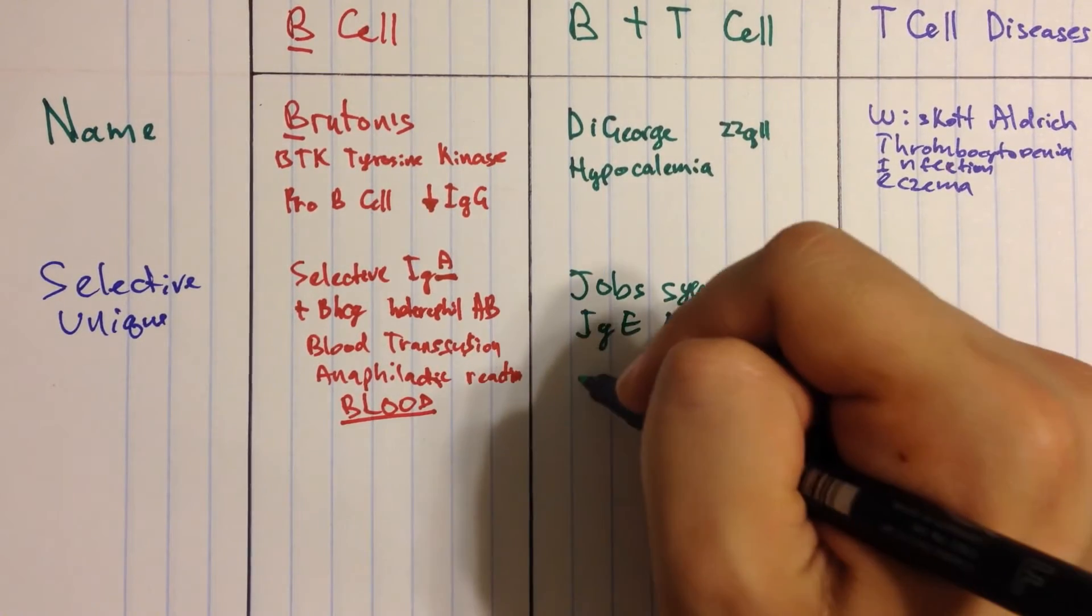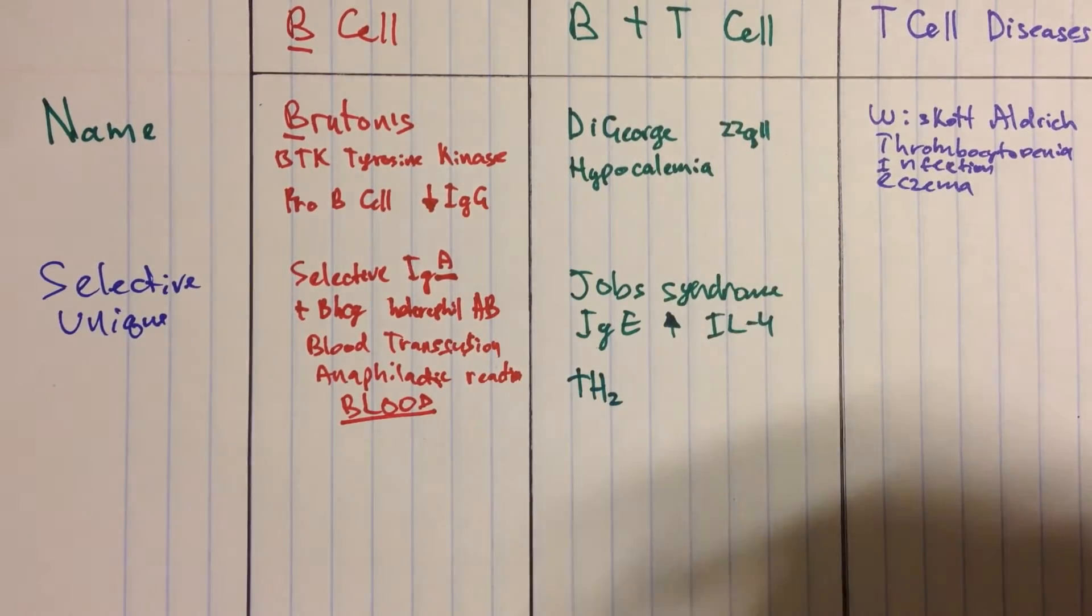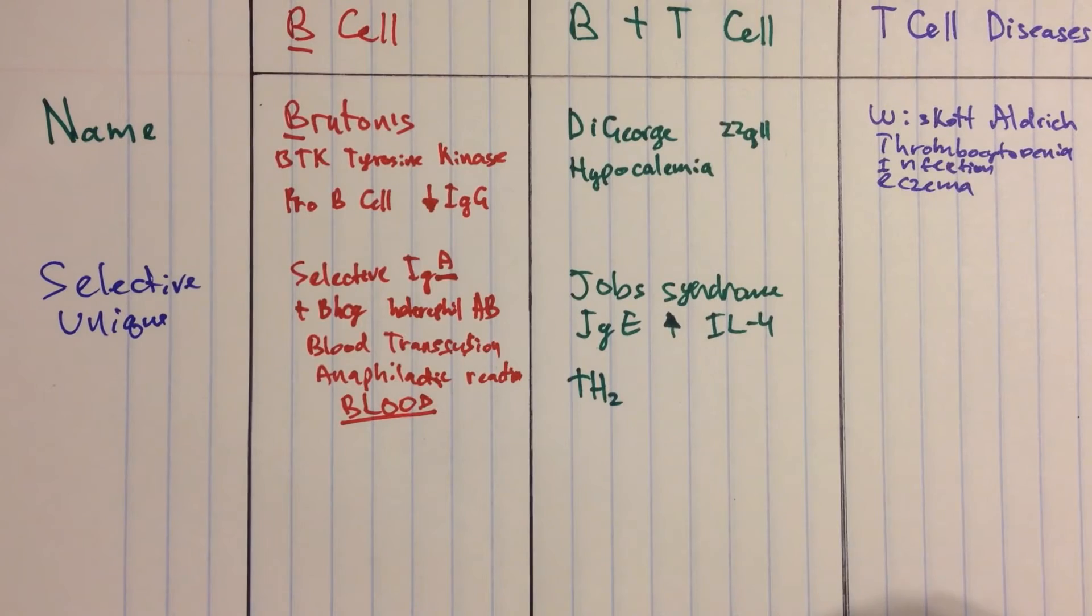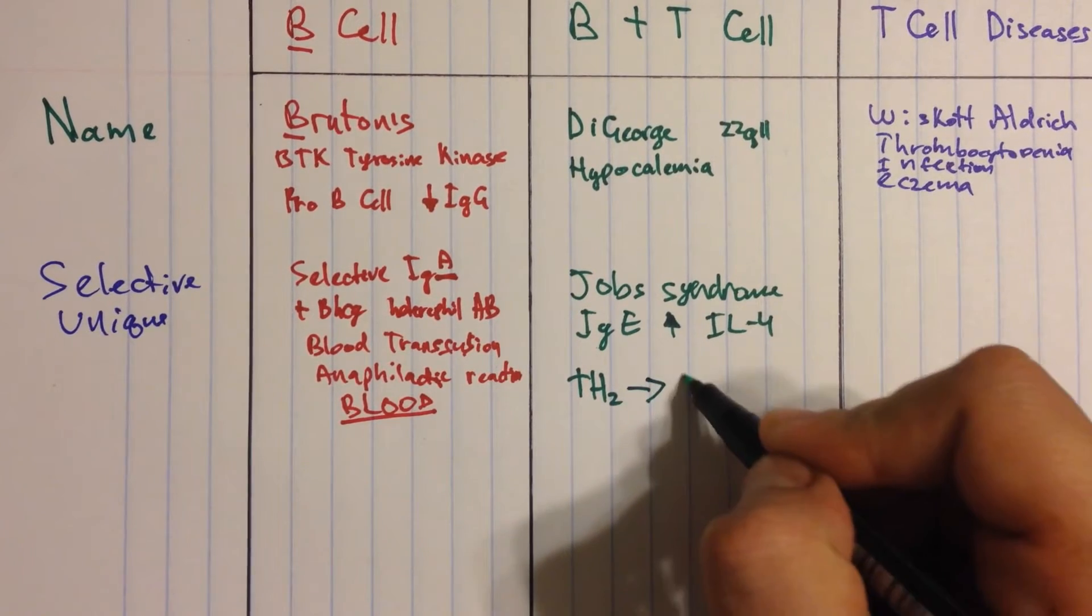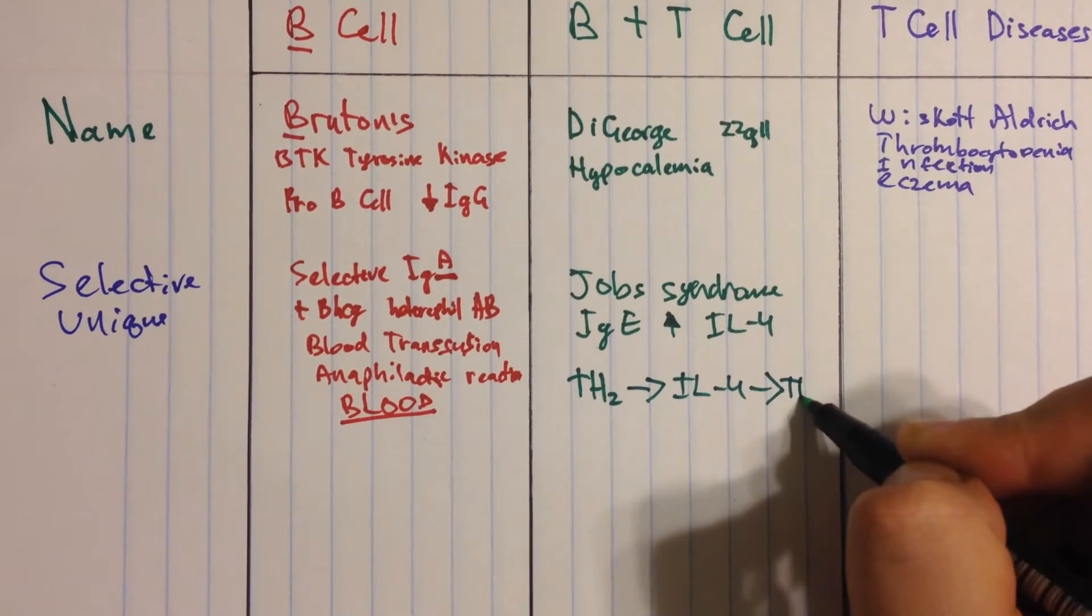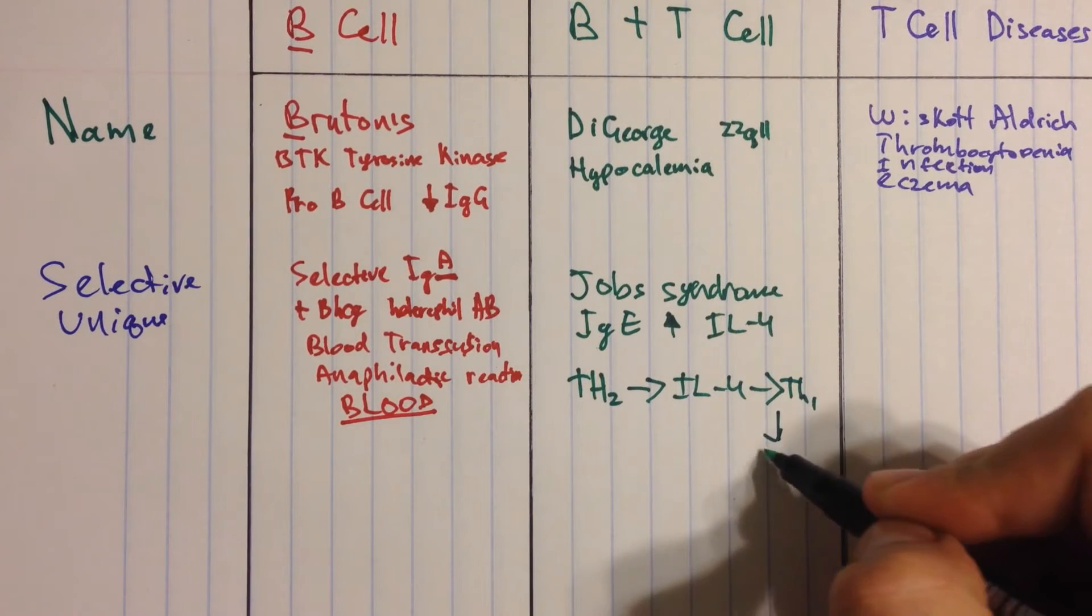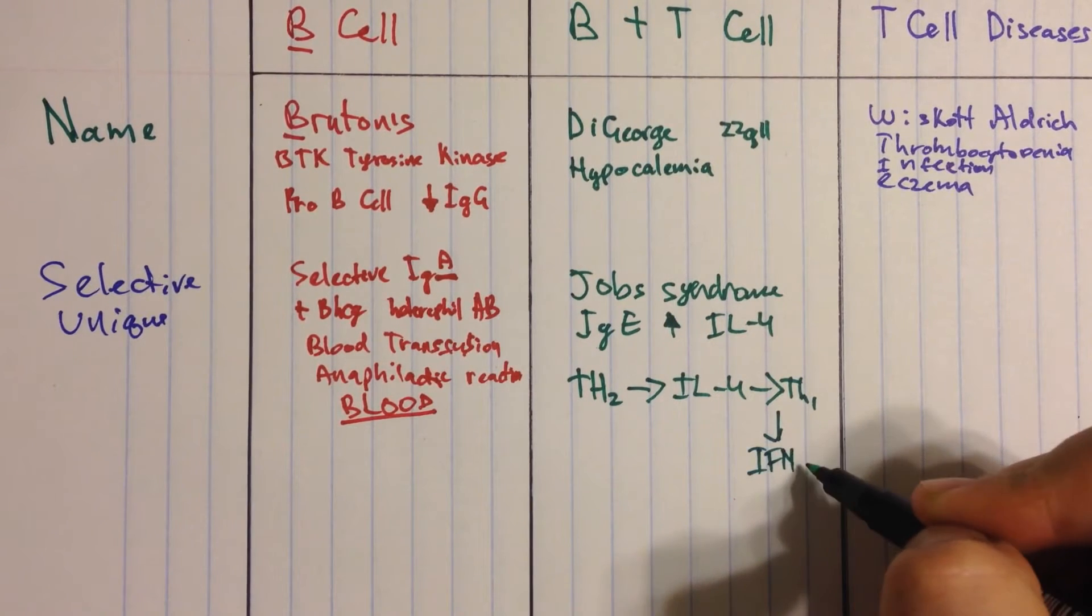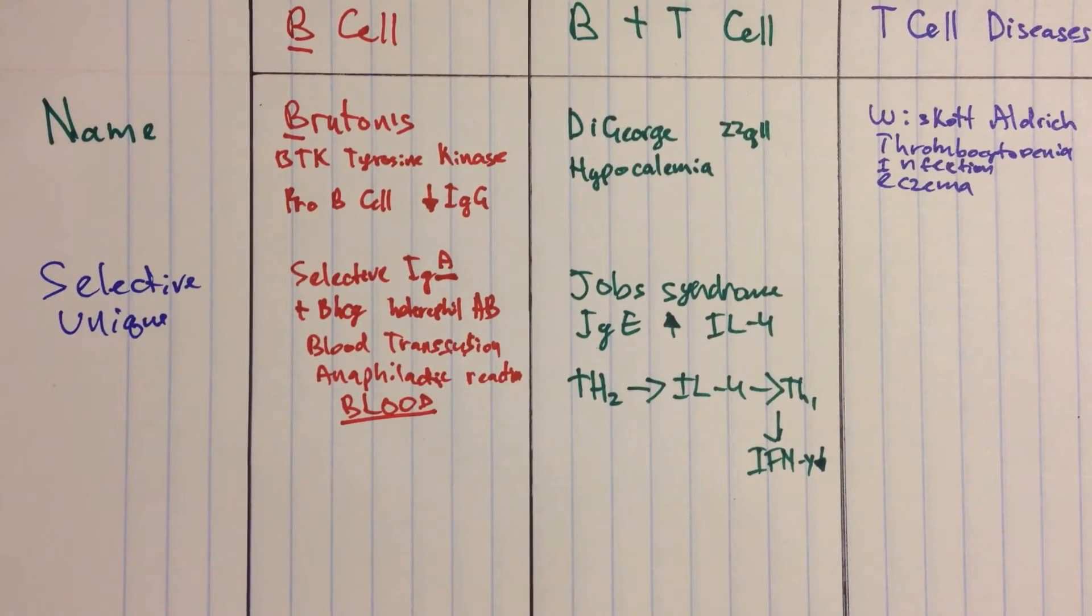Now interleukin-4 is produced by TH2, or TH2 lines of cells, which are designed for fighting external threats. Because you have a big production of interleukin-4, it suppresses TH1 cells and prevents them from producing interferon-gamma. So low interferon-gamma means decreased ability to fight off certain kinds of infection.